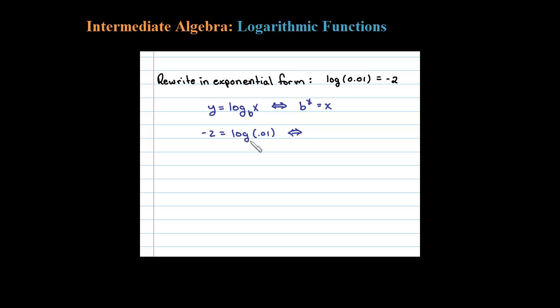base is not written, it's assumed the common log is base 10. Okay, so the base here is 10. 10 to this exponent has to equal that x there. So 10 to the negative 2 power equals 0.01.